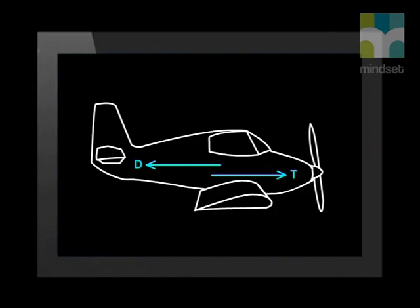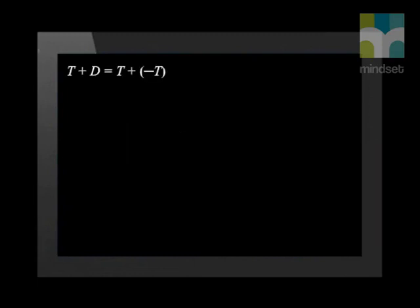Let's draw the two vectors. The drag vector D is the same size but opposite in direction to thrust vector T. In other words, vector D is equal to minus vector T. When we add those two vectors together, the result is zero. Here we are adding vectors in one dimension. It's just one dimension because the vectors lie on the same line.